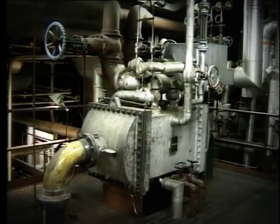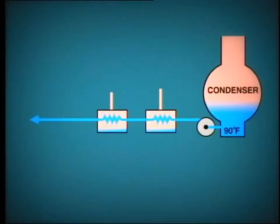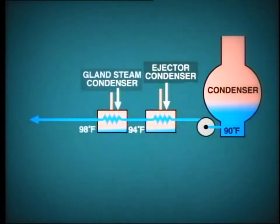Initially, a small amount of heat is picked up as the condensate passes through the steam air ejector condenser and from here through the gland steam condenser. In both cases, this heat recovery improves efficiency as it condenses ejector exhaust steam and leak-off gland steam.